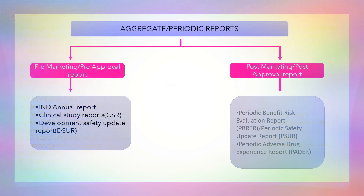Aggregate or periodic reports are classified into two types: pre-marketing or pre-approval reports, and post-marketing or post-approval reports. Pre-marketing reports include the investigational new drug annual report, clinical study reports, and the development safety update report. Post-marketing reports include the periodic benefit risk evaluation report, the periodic safety update report, and the periodic adverse drug experience report.